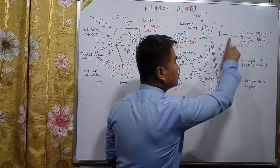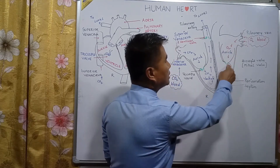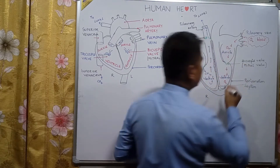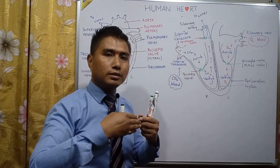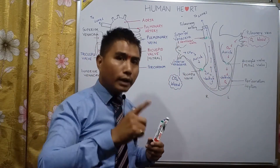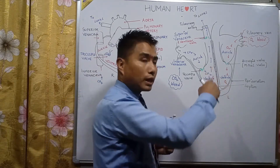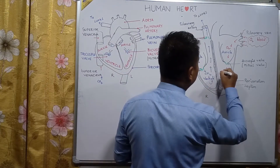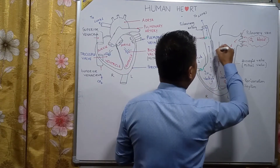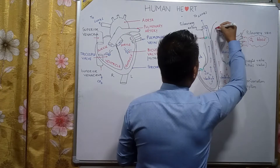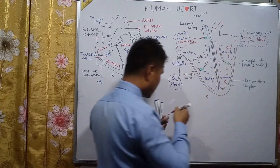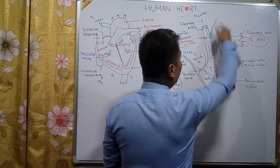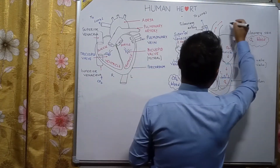The oxygenated blood tries to go back to the left auricle, but the bicuspid valve closes. As a result, there is only one way for the oxygenated blood to go out of the heart — through the blood vessel known as the aorta.